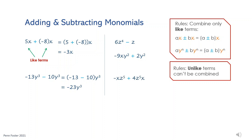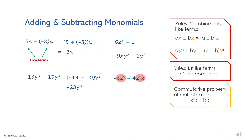Add negative xz to the fifth and 4z to the fifth x. Due to the commutative property of multiplication, xz to the fifth and z to the fifth x are considered identical because products are not affected if multiplicands and multipliers are swapped. In this case, add negative 1 and 4, which is 3. The final answer is 3xz to the fifth or 3z to the fifth x.